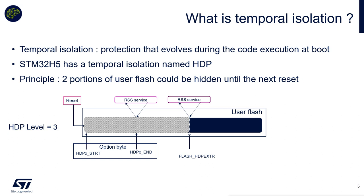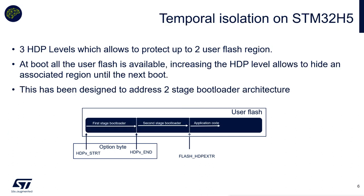Two portions of flash disappearing — does that remind you of something? A two-stage bootloader. In fact, this mechanism with two portions of flash that disappear has been designed to address two-stage bootloader architectures. You can imagine the first stage bootloader in the first protected flash portion, a second stage bootloader in the second, and after each execution, HDP level increments and the code disappears.